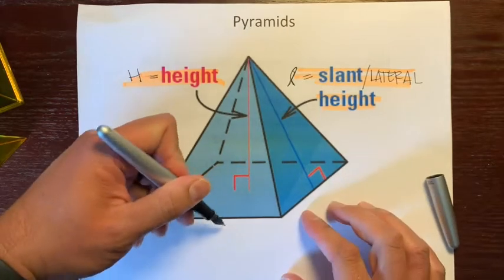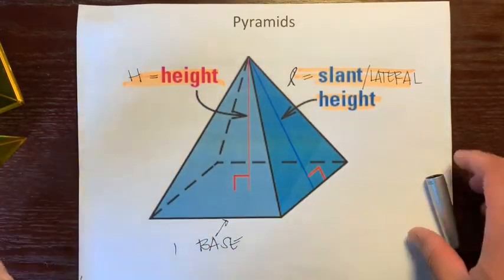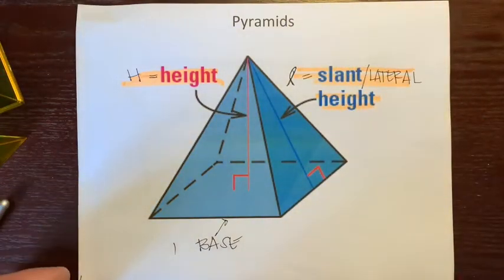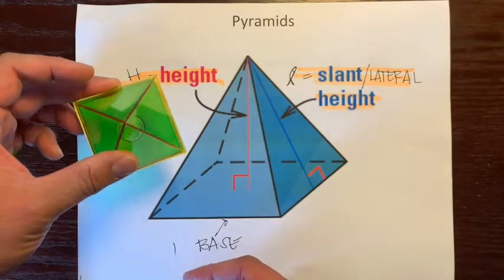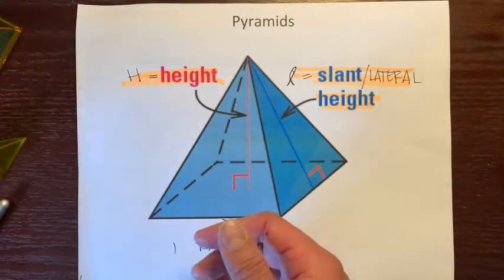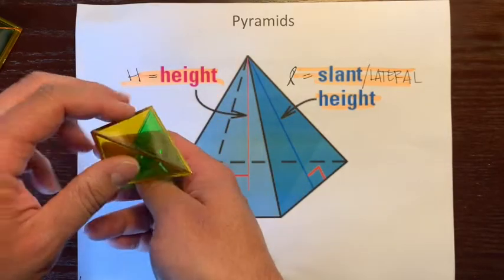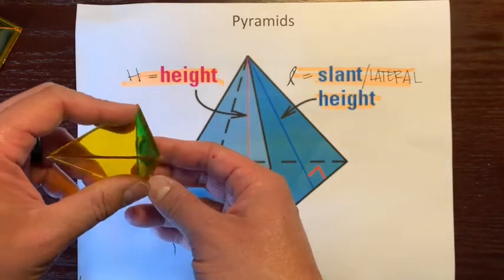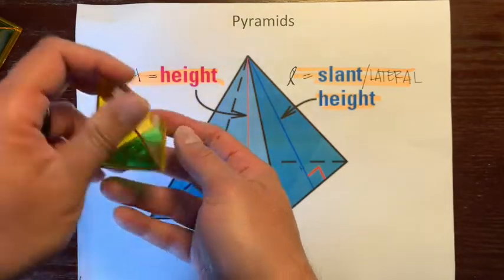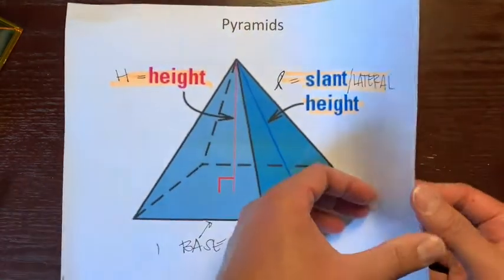This is just the base, and there's only one. This one specifically is a square pyramid because the base is a square. And this one is a triangular pyramid because this base is a triangle. If you want to be more specific, we could say an equilateral triangular pyramid because the base is an equilateral triangle. So let's go on to the surface area of a pyramid.